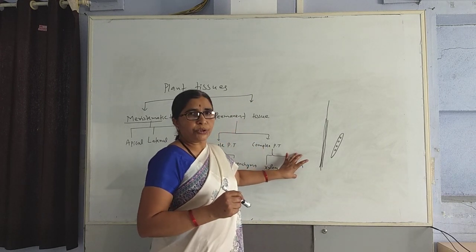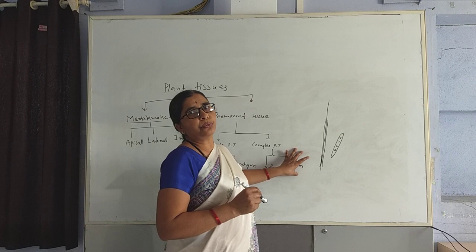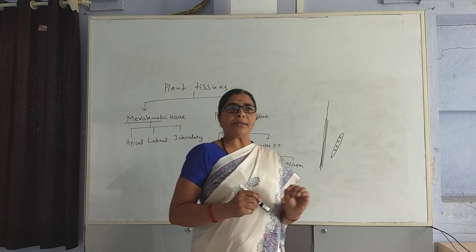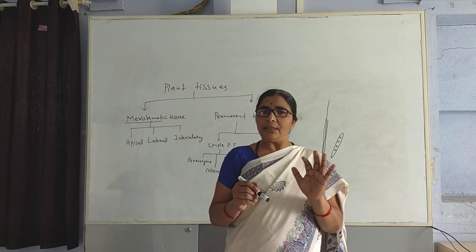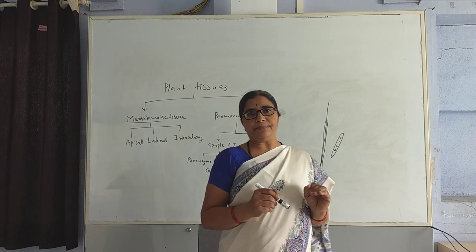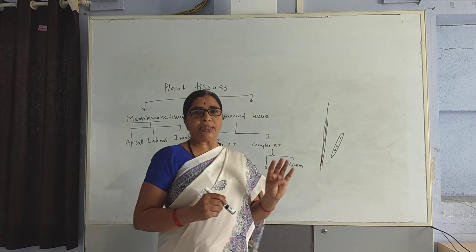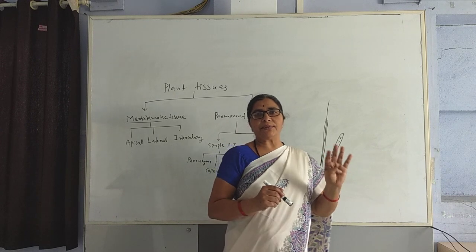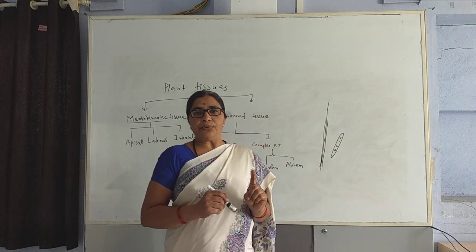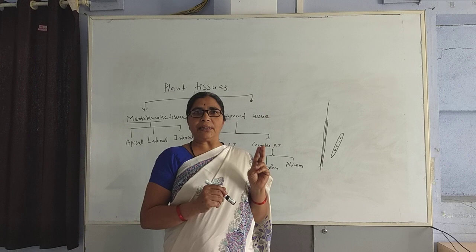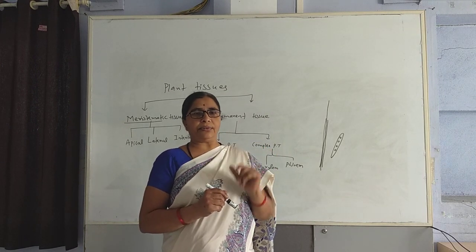Next comes phloem tissue. Phloem tissue transfers the food prepared by roots within the plant. Phloem tissues also have four types of cells: sieve tubes, companion cells, phloem parenchyma, and phloem fibre.